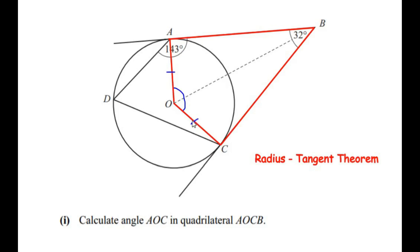Here we can see that OA is a radius and OC is also a radius, and there are two tangents touching these two radii. BC touches the radius OC at point C, and BA touches the radius OA at point A. So angle OCB is going to be 90 degrees according to this theorem. Similarly, angle OAB is also going to be 90 degrees.